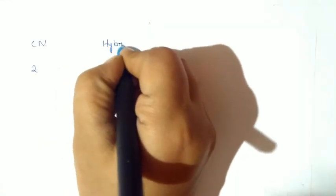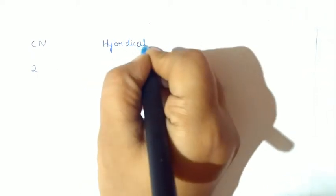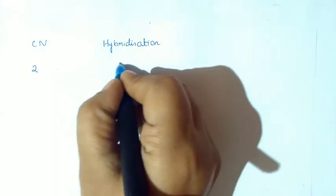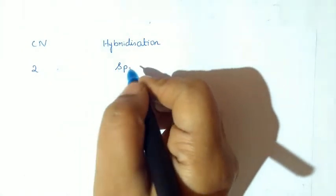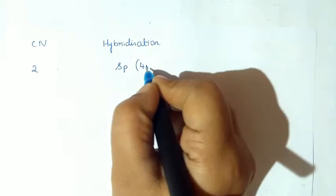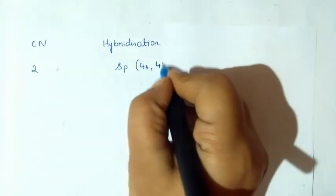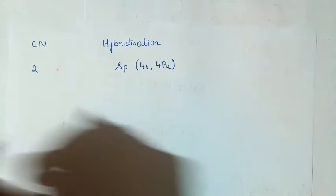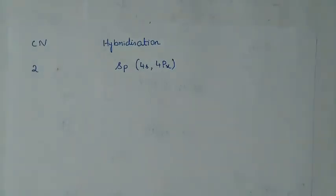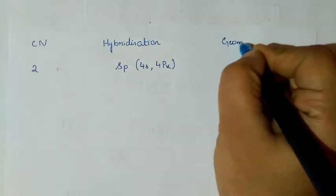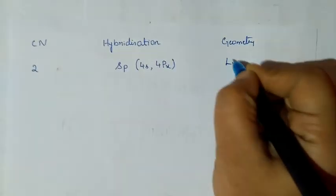So we shall write all the types of hybridization along with the coordination number. If coordination number is 2, then hybridization will be SP. The orbitals involved are 4S and 4PX — one S orbital and one P orbital — and the geometry is linear.